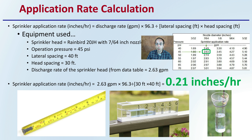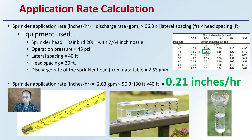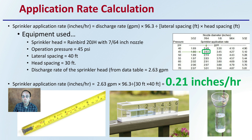Here's an example. The equipment used is a Rainbird 20JH with a 7/64-inch nozzle. The operating pressure is 45 psi, the lateral spacing is 40 feet, and the head spacing is 30 feet. The discharge rate from the sprinkler head, taken from the data table, would be 2.63 gallons per minute.